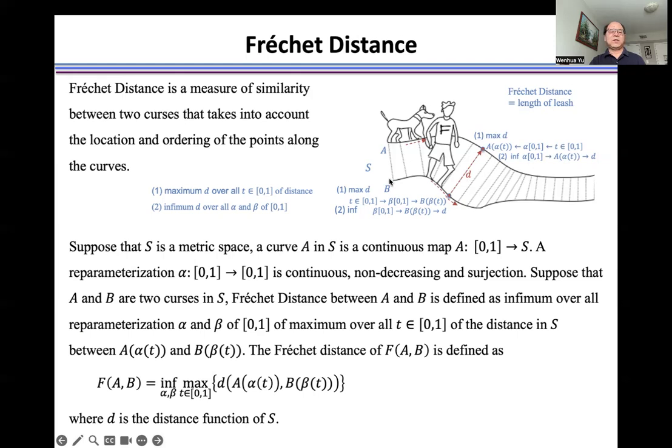To do so, first we introduce parameterizations alpha and beta, then we change T of distance from zero to one to calculate the maximum distance D between curves A and B. And then we change alpha and beta to calculate the infimum D between point A and B. The distance D is defined as Fréchet distance.